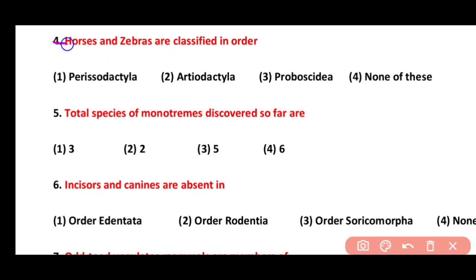Question 4. Horses and zebras are classified in which order? Perissodactyla, Artiodactyla, Proboscidea, or None of these. Correct answer is option 1. Horses and zebras, along with rhinoceros, are included in order Perissodactyla.